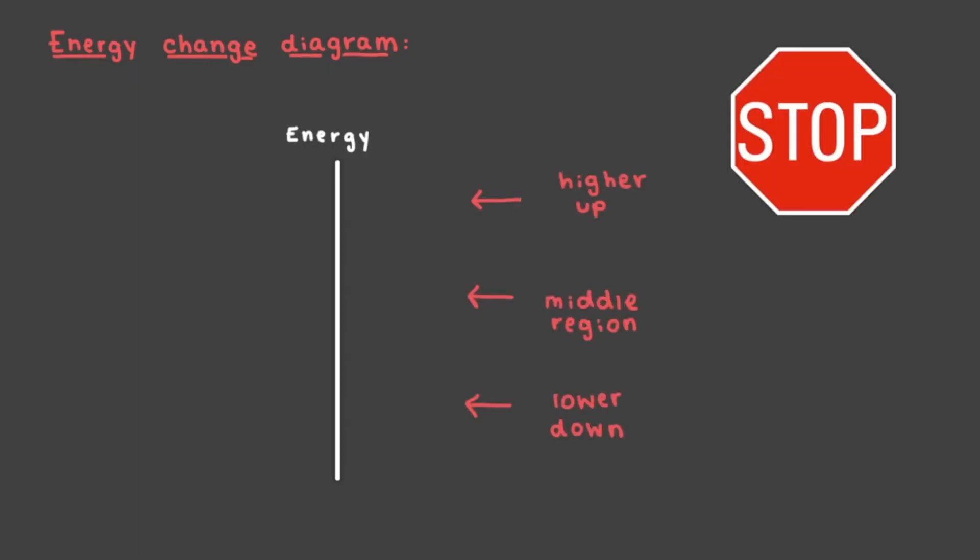It can be very helpful to represent this process using an energy change diagram. Let's investigate. These diagrams have a single axis, the vertical axis, which is energy. Where do high energy things go on this axis? That's right, higher on the axis means something is higher in energy.